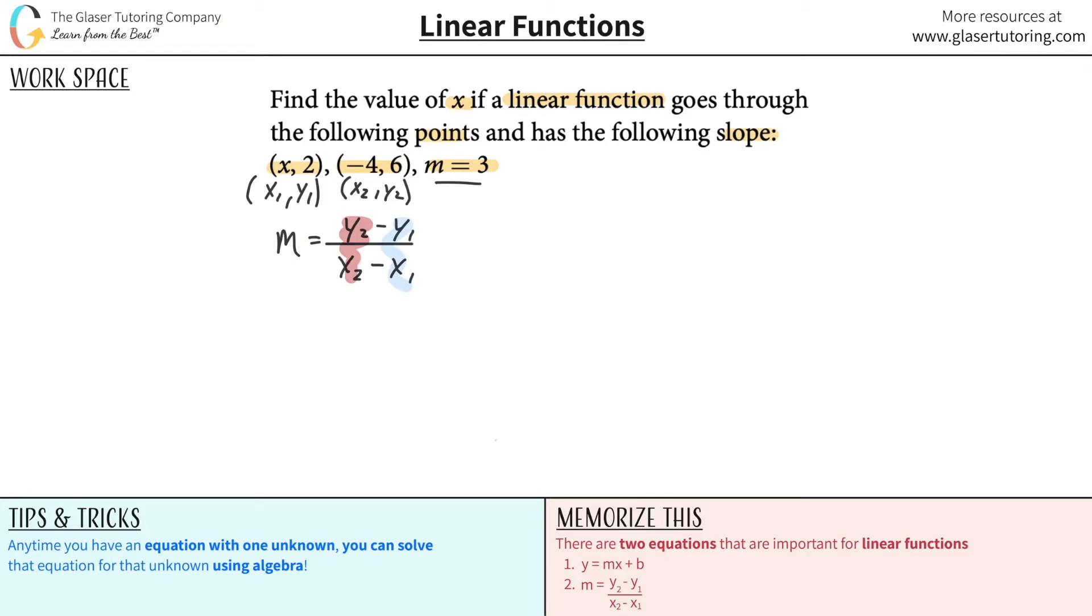So the slope they told us is 3. The y2 value I define to be 6. The y1 value, so minus the y1 value I define to be 2. Then divide it now by my x2 value, which is negative 4. And then minus the x1 value, which I define to just be x. Now look, this is beautiful. It should be jumping up and down, right? Because this is one equation with one unknown. And we can solve it. You know the answer now. You just got to do some algebra. That's it.